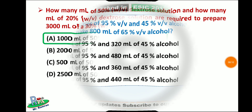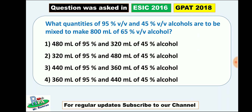Now here is an important question that was asked in the ESIC Pharmacist 2016 examination as well as in the GPAT 2018 examination: What quantities of 95% w/v and 45% w/v alcohols are to be mixed to make 800 ml of 65% v/v alcohol? Four options are given. Use the allegation method to find the answer. I've covered this in my previous ESIC 2016 and GPAT 2018 answer key videos — go check those, or write your answer in the comments.